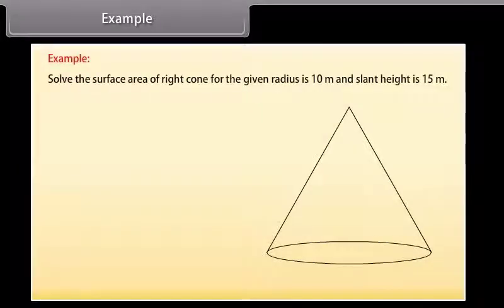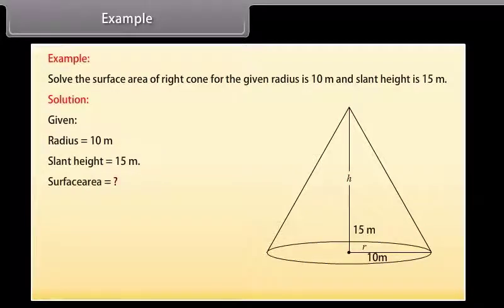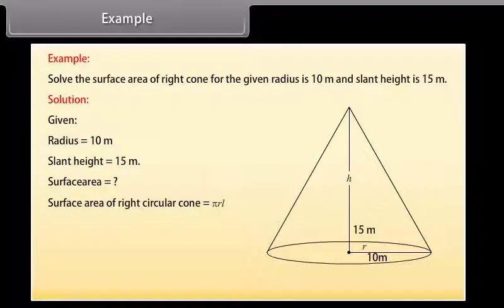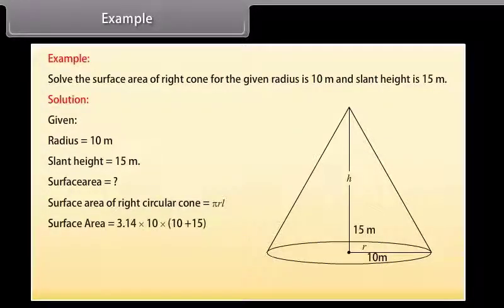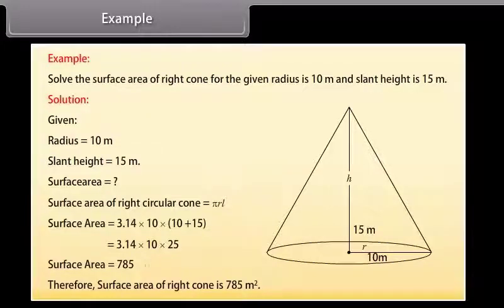Example: Find the surface area of a right circular cone where radius = 10 meters and slant height = 15 meters. Solution: Surface area of cone = πrL + πr² = πr(L + r) = 3.14 × 10 × (10 + 15) = 785 square meters.